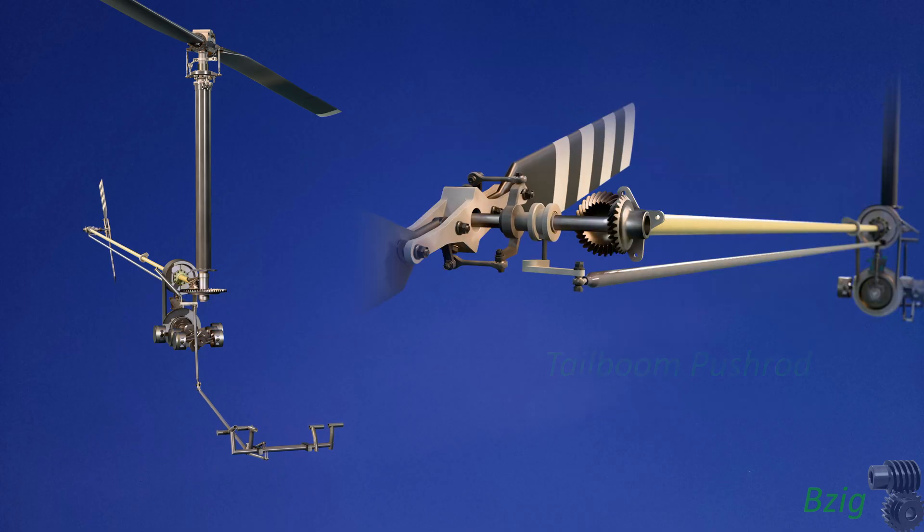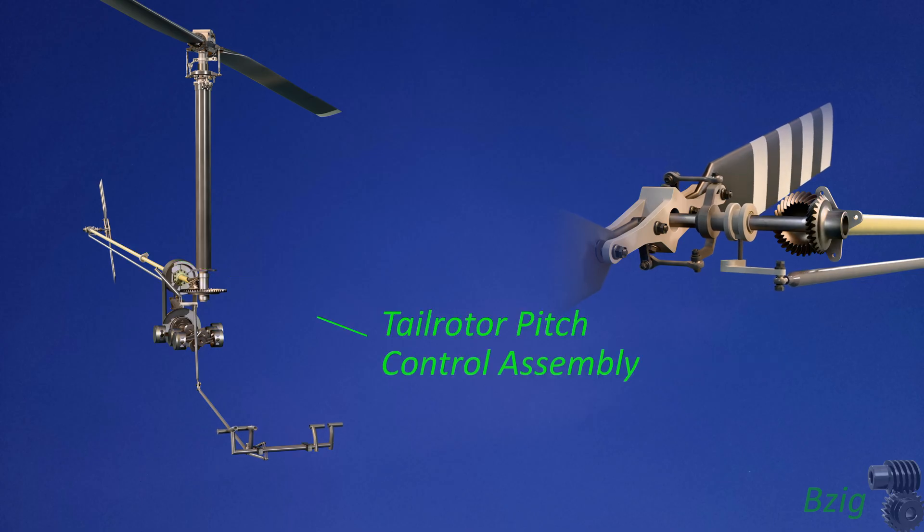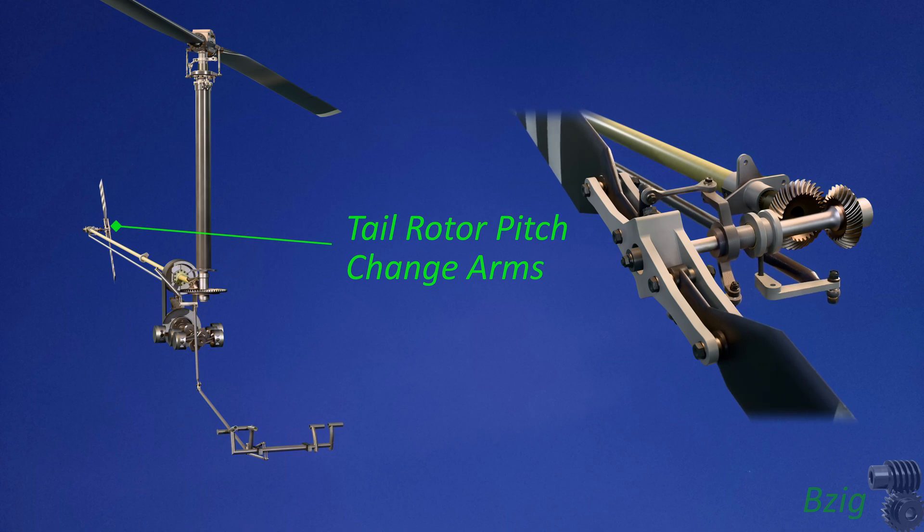This bell crank then passes control via a long push rod within the tail boom all the way back to the pitch control assembly mounted on the tail rotor gearbox. That pitch control assembly directly controls the motion of the pitch change arms located on each side of the tail rotor blades.